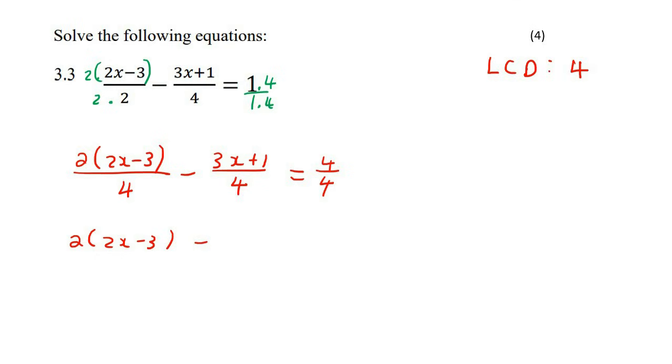This question has a really interesting part. Can you see what happened there? Look at that carefully. This minus was for this whole thing. But when I wrote it now, this minus only looks like it's affecting the 3x. So you must do that, because this minus is for this whole fraction. So I put it in brackets like that. And then I say equals to four.